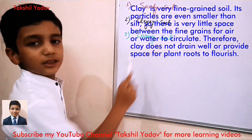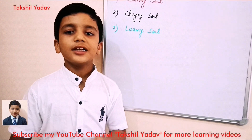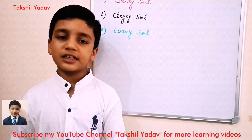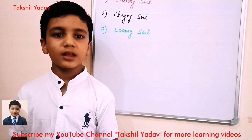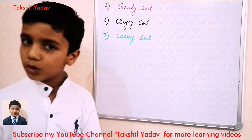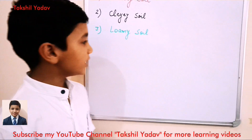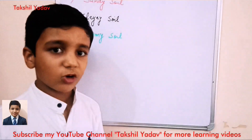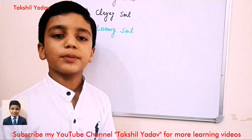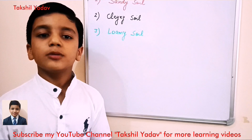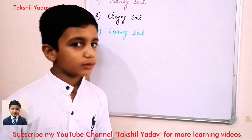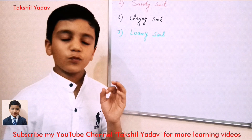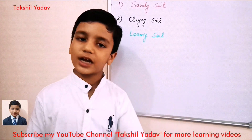And at last comes the third type, that is loamy soil. The loamy soil has every kind of particle — sand, clay, and silt — in proportion. It contains humus which makes it fertile. Due to the presence of clay particles it can hold water, and due to the presence of sand particles it can hold air, making it well aerated. That is why it can hold water and is also fertile due to the presence of humus. Crops like wheat, barley, maize, and cotton can be grown in it, and even pulses, vegetables, and fruits can be grown in loamy soil. It is the soil that is fit for almost every kind of crop.